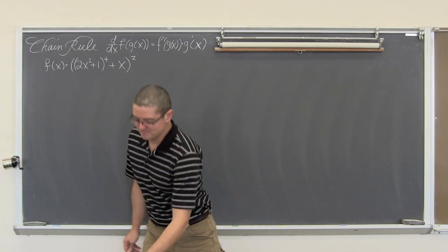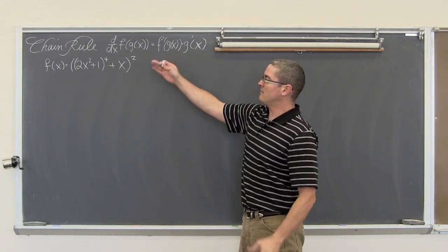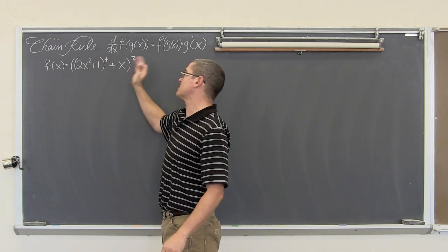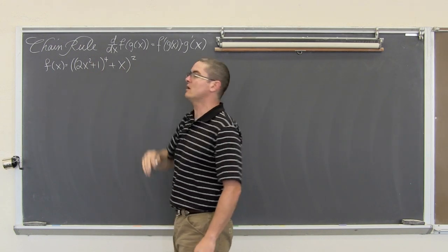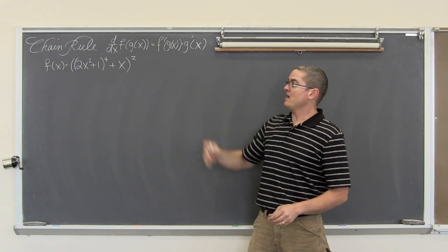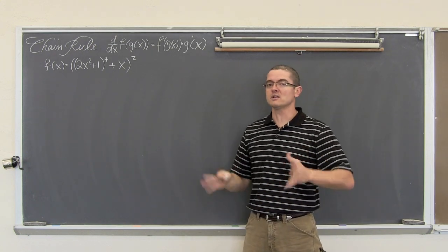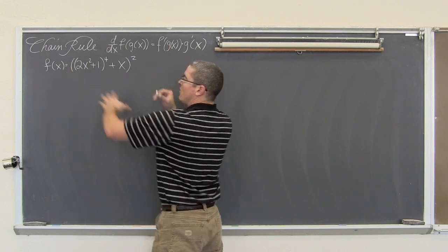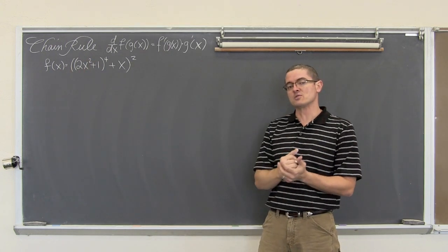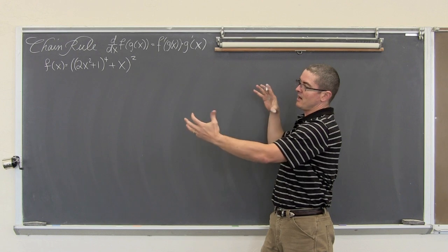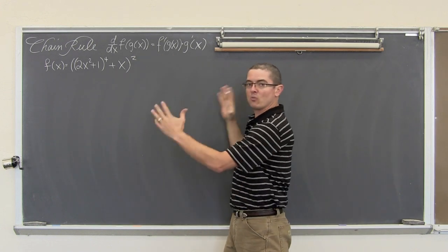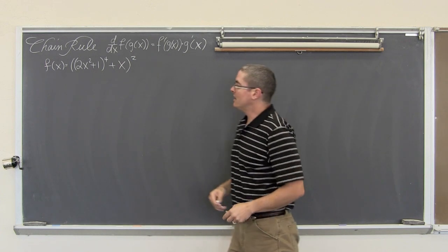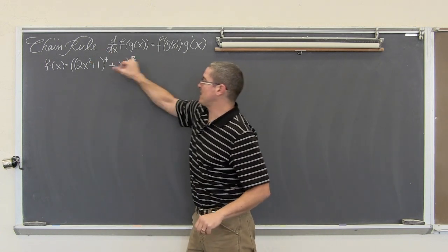Last example. We have f of x equal to 2x squared plus 1 raised to the 4th, plus x, all within its own power of 2. This is just going to be the chain rule done over and over again. Normally in parentheses you work your way in; with derivatives we start from the outside and work our way in through all the powers inside this big something squared.